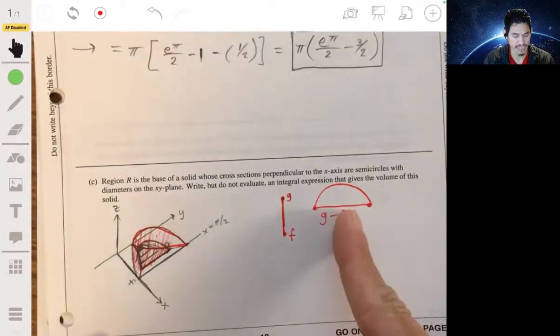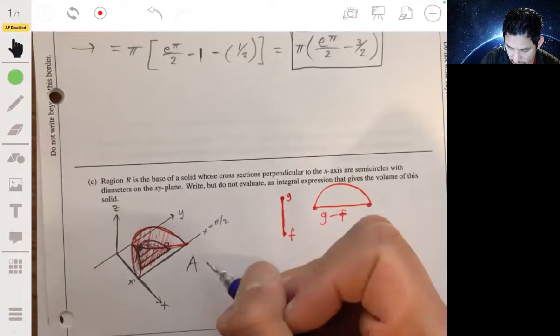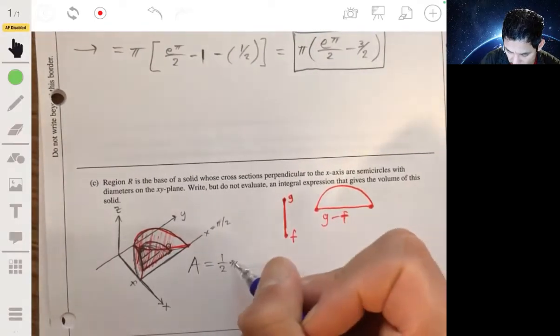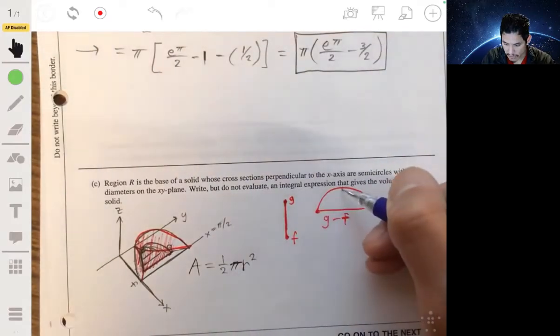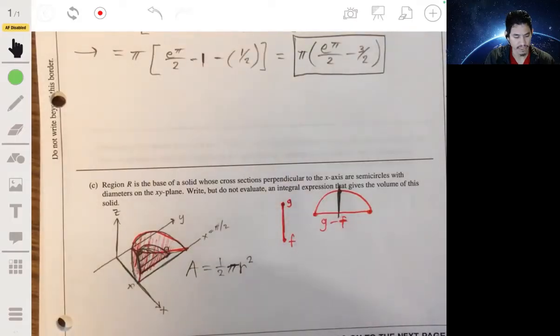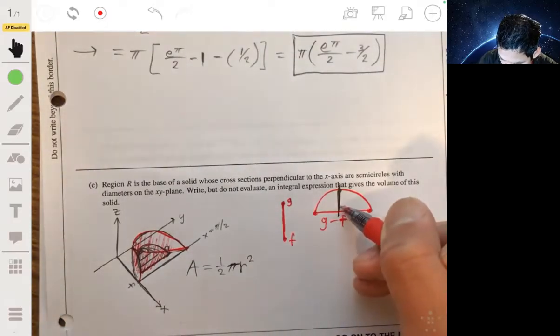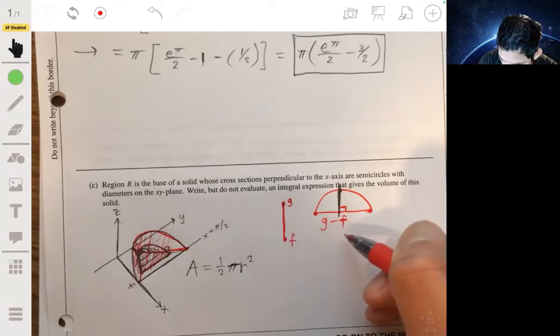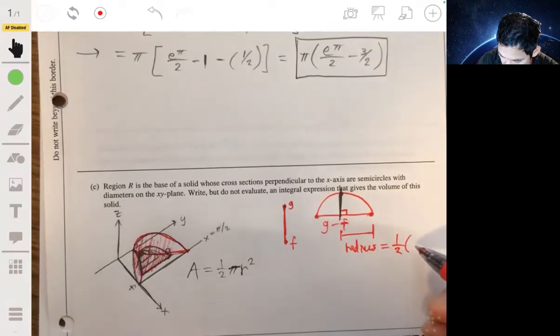And remember the area of a semicircle is one half πr². Now the radius of this going in half would then just be half of this. So the radius, so the distance from here to here, that would just be—that's the radius. That would just be one half of G minus F.